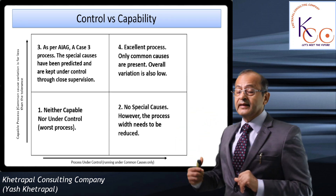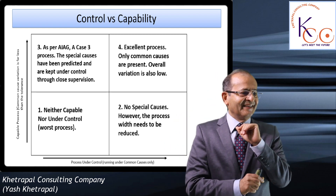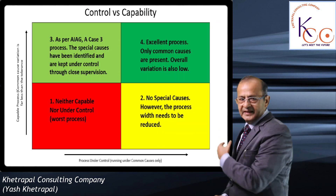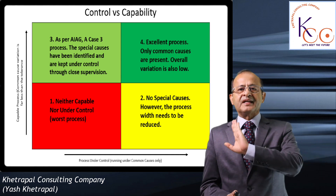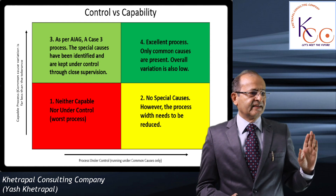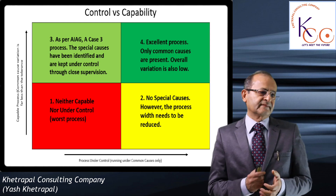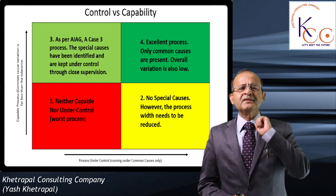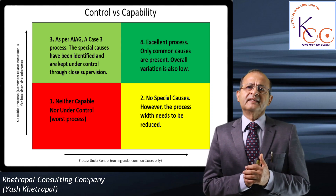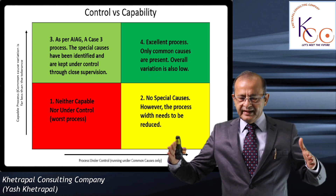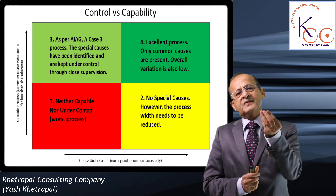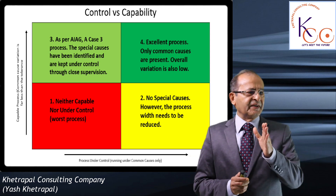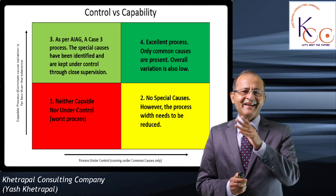Stage 4 is a beautiful, excellent process — it is both under control and capable. Looking at the color coding: Stage 1 is red (very bad), Stage 2 is yellow (no special causes but overall process width is high), Stage 3 is somewhat acceptable, and Stage 4 — just monitor the critical matrix.